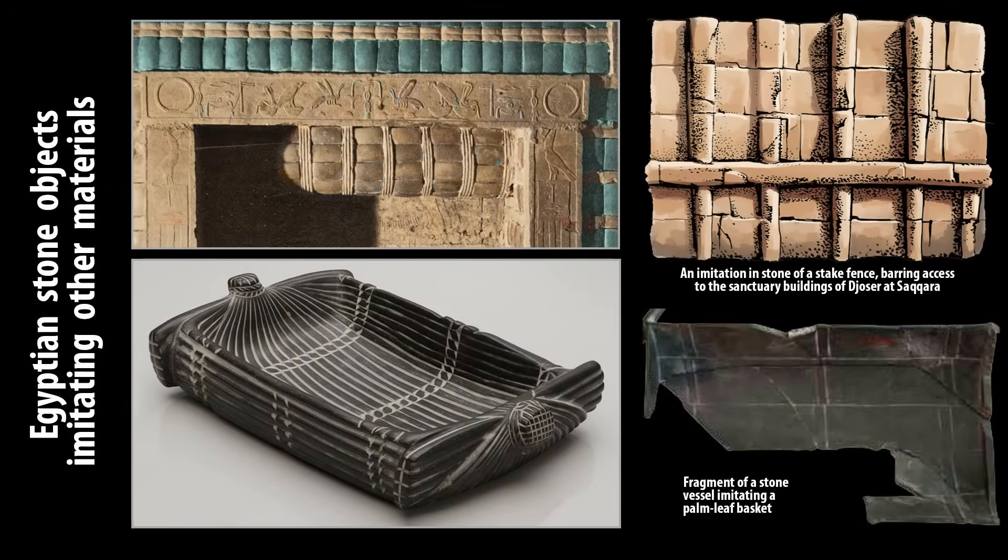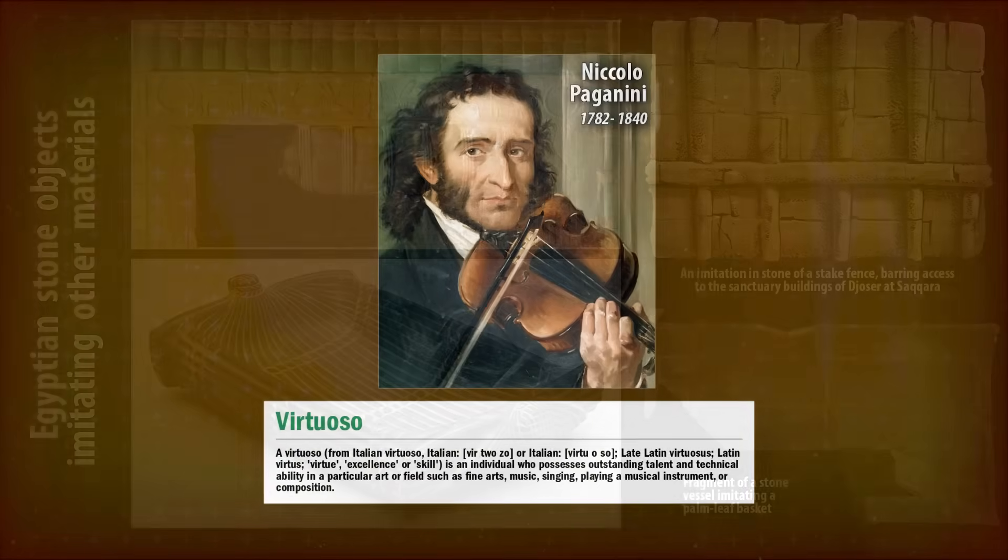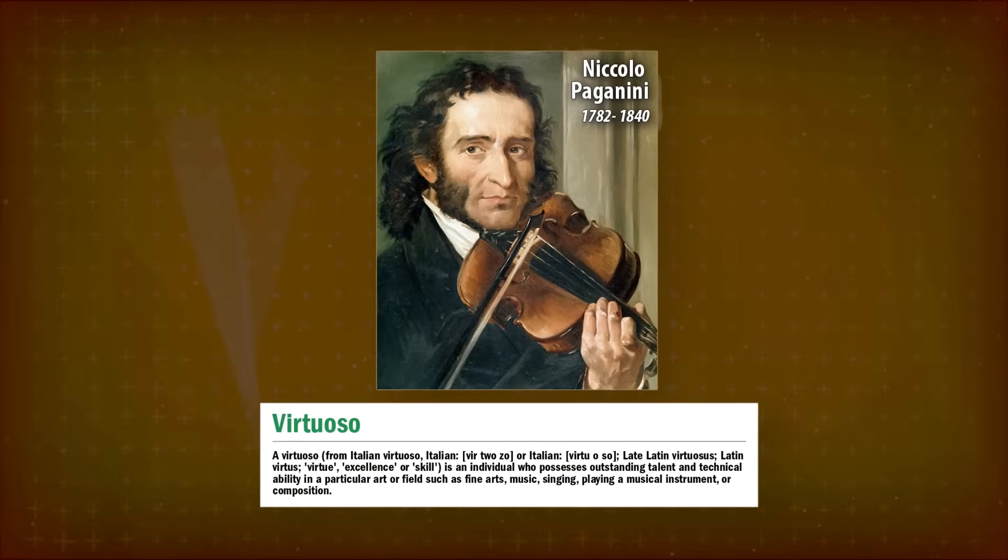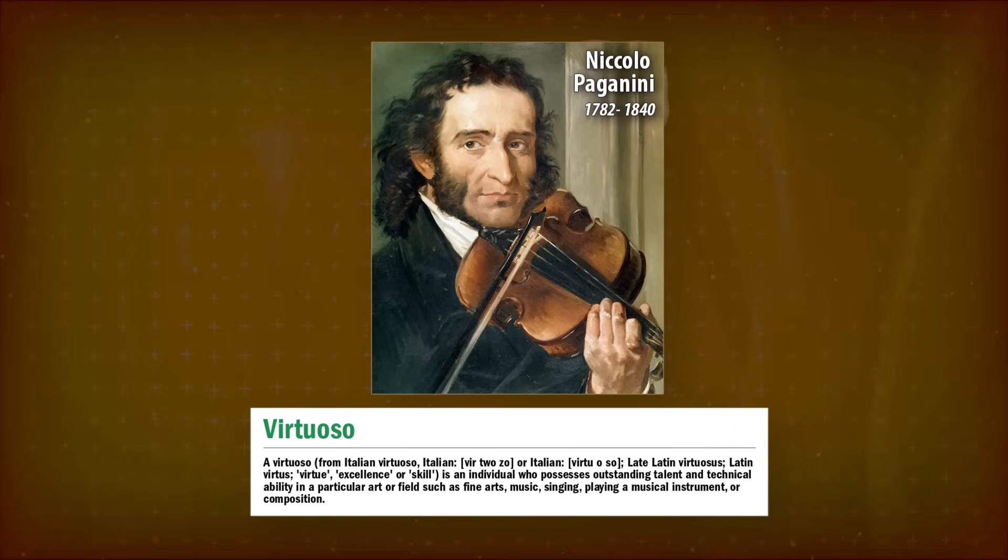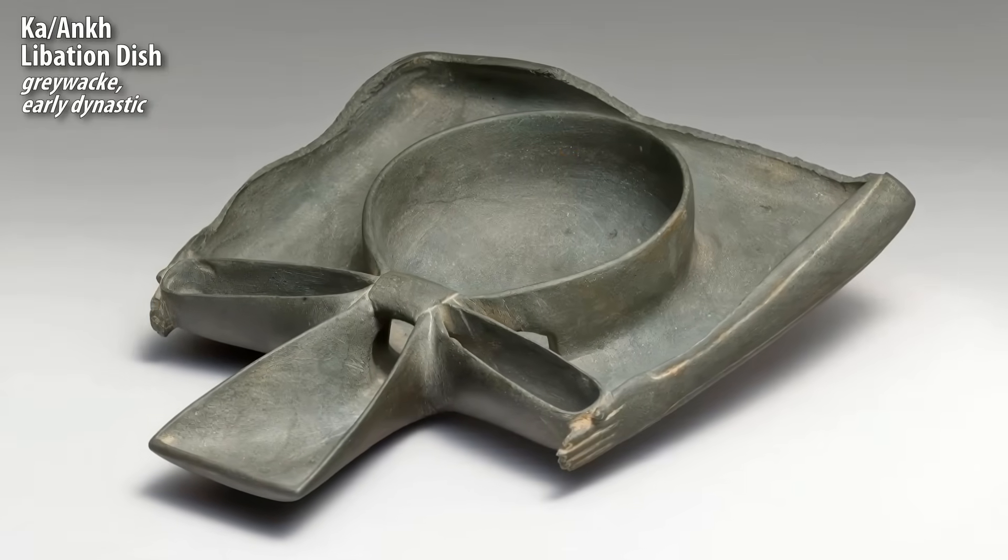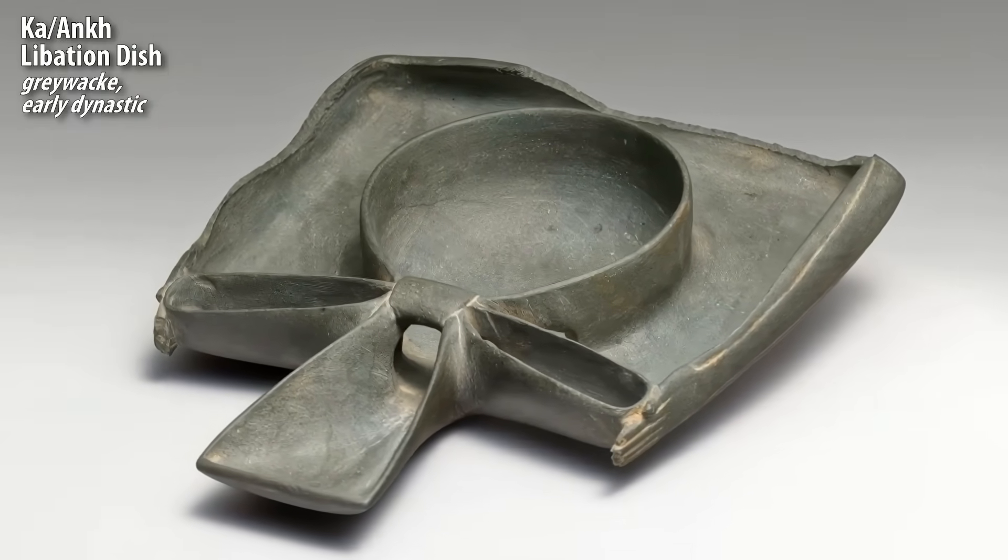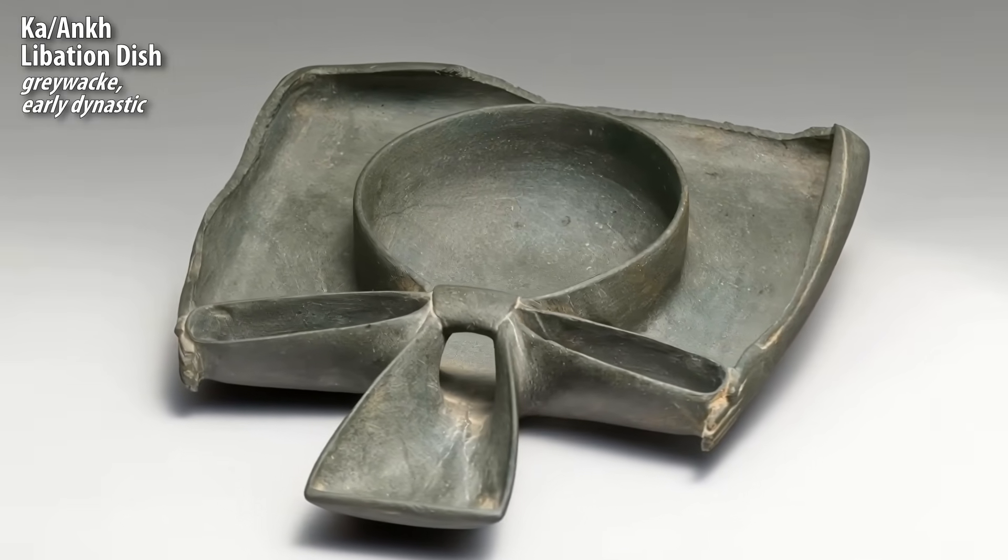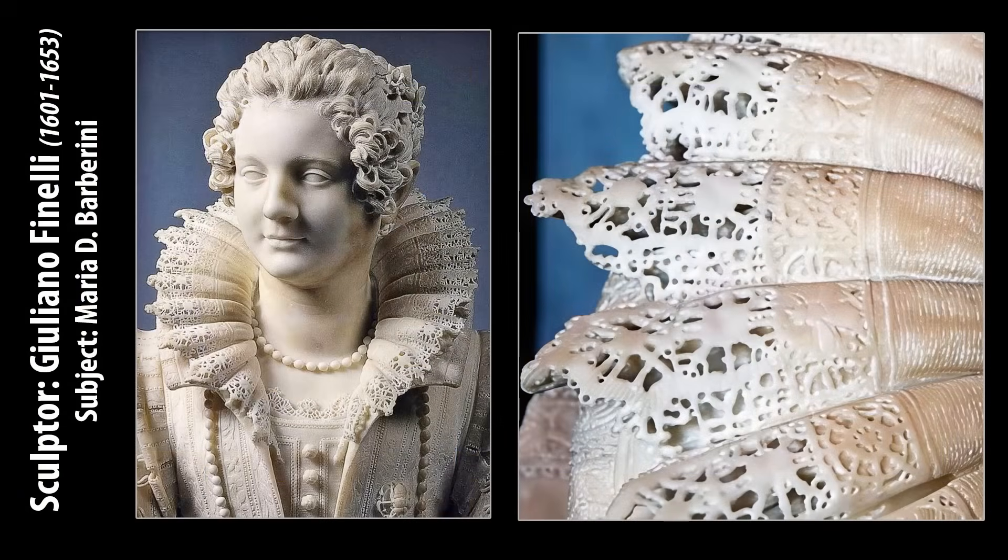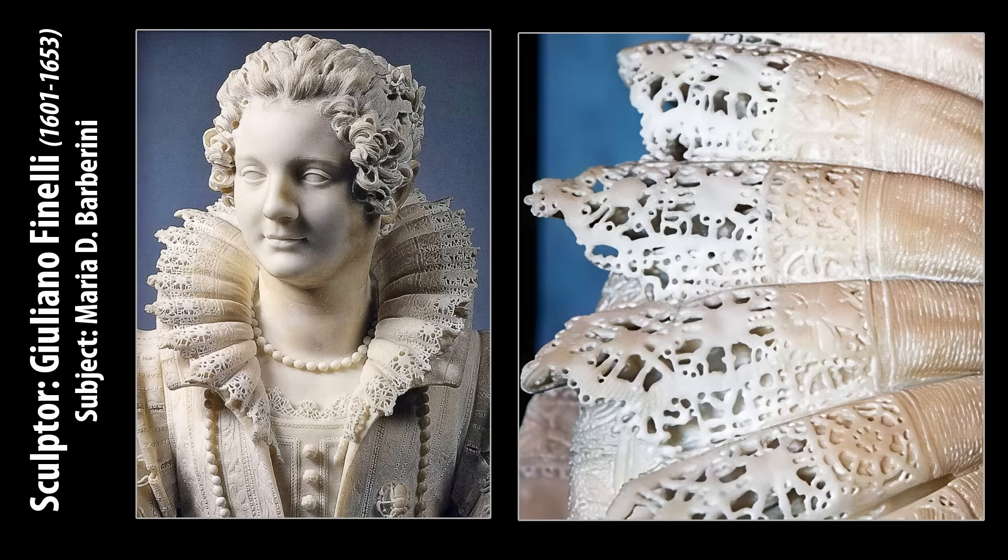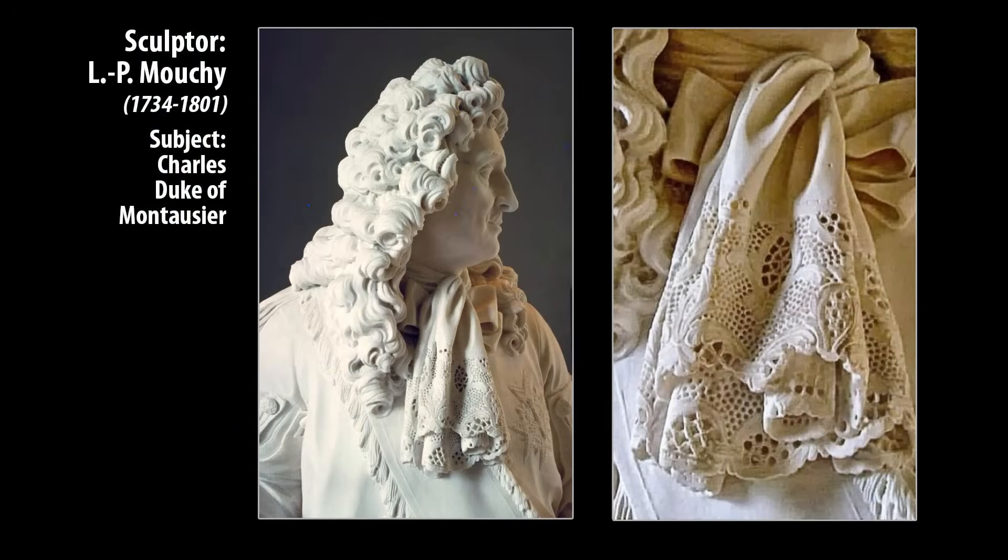Besides mimicking other materials, the Sabu disk fits another trend that persists throughout art history. We can call it a deliberate virtuosity display. That is, creating an artwork whose primary goal is to show off one's technical mastery of the medium. This already starts in ancient Egypt. Some stoneworkers didn't just mimic thin metal surfaces in stone. They showed off by creating shapes that are very hard to do in stone, like thin lobes folding over themselves. This happened again later on in history. Sculptors going to extreme lengths to create very delicate forms in stone. We're showing only a few examples here, but there are many more.